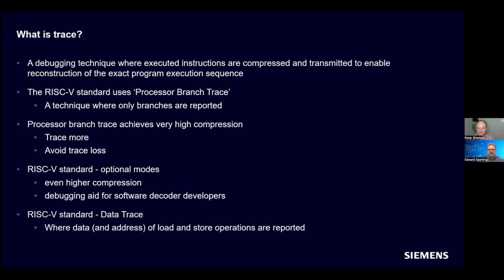Trace is a debugging technique where executed processor instructions are compressed on chip and then transmitted to the host — the debugger — where it can reconstruct that program execution offline. The compression is referred to as encoding, and the decoding is done on the host. One way of doing that would be transmitting every single instruction, but that would result in unmanageable volumes of data. The RISC-V standard employs what's known as processor branch trace, where only branches or deltas in the program code are reported, resulting in very high compression.